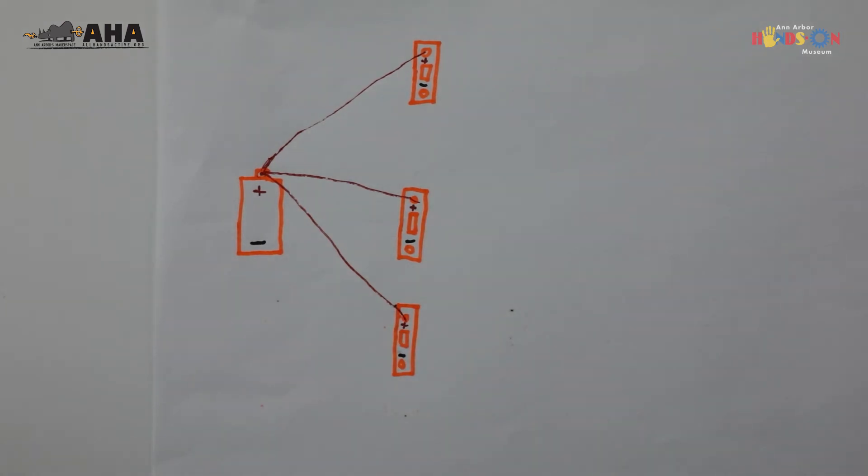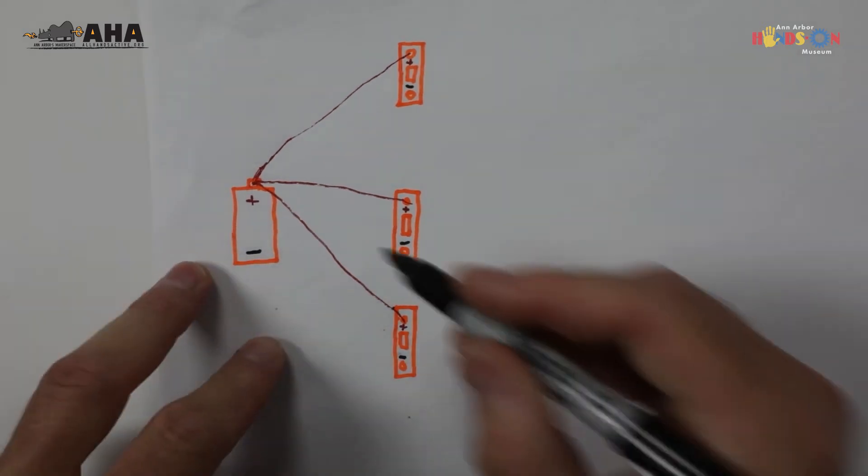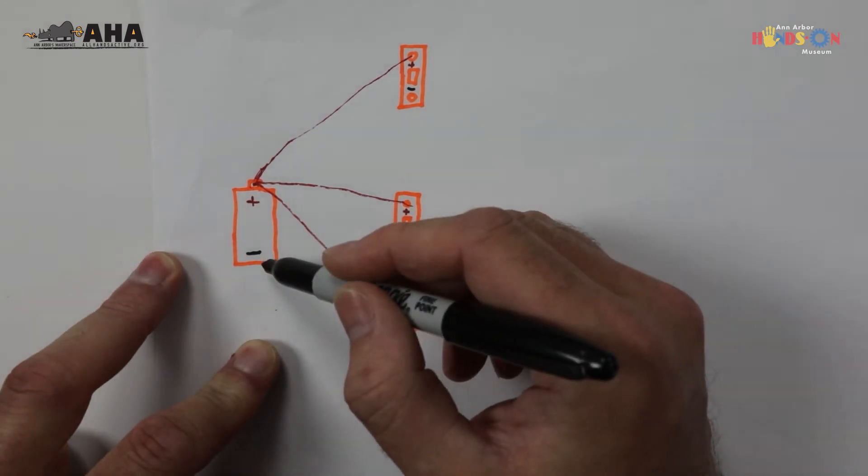What about the other side? Well this is gonna be tricky to show on a diagram because we're gonna do something you probably shouldn't do with the thread, but just imagine that the negative is on the other side of the fabric or away from the wires here—just for a thought experiment. We're going to connect the negatives.